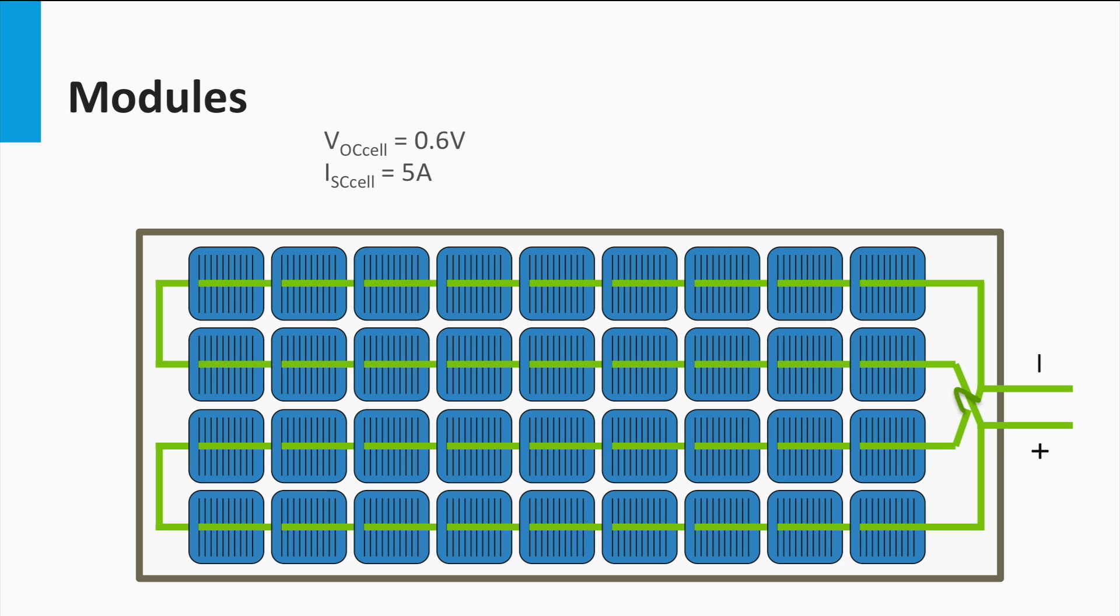If we would rearrange the connection of this module, we can get a different current and voltage output. If we connect two strings of 18 series connected solar cells in parallel, we would get a short-circuit current density of 2 times that of a single solar cell, which is 10A. The open-circuit voltage would be 18 times that of a single solar cell, which is 10.8V.